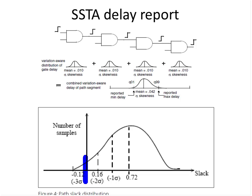With increasing numbers of corners, pessimism is increasing, causing engineers to waste time solving paths with excessive pessimism. SSTA reduces pessimism for random process variation and helps close timing much more easily. The shift in thinking is from 'slack is zero' to 'slack is met till three sigma or minus three sigma.'